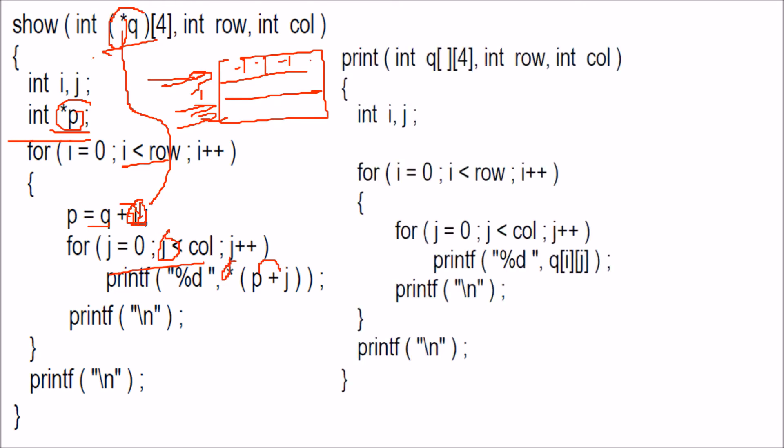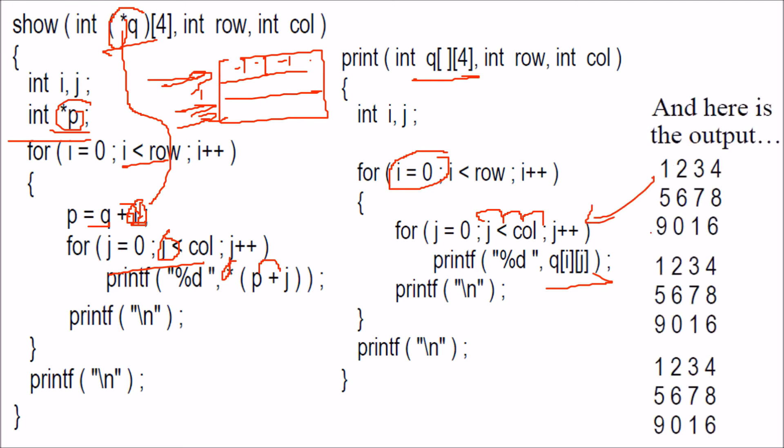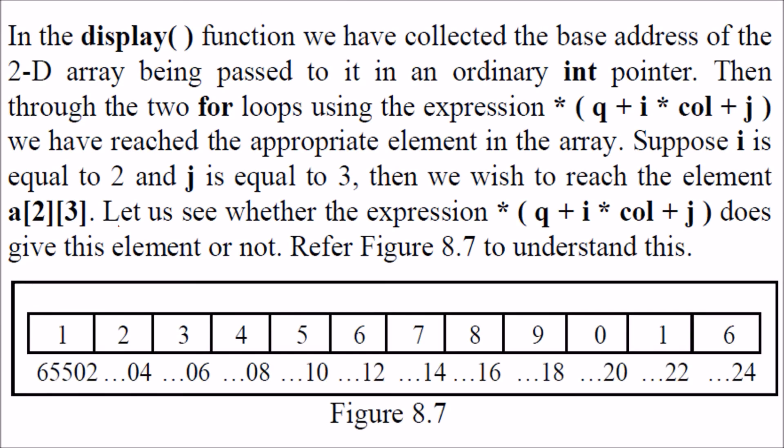This is how the second method goes. The third method is quite simple. You just have to take it in some two-dimensional array q[i][j]. For every row, all the columns will be printed in a similar fashion. This is the simplest way. In all these functions, the same value will be printed, the same table will be printed.